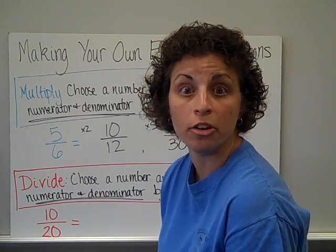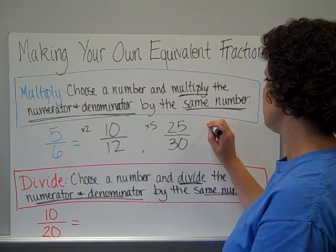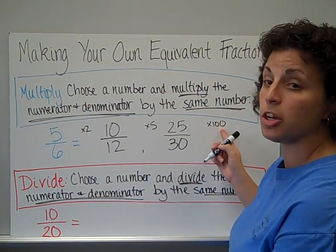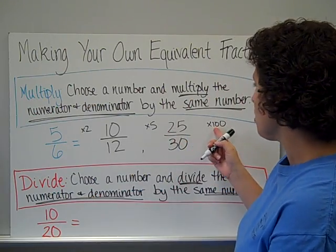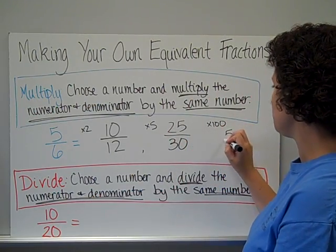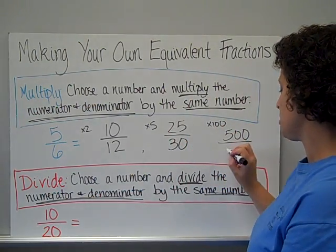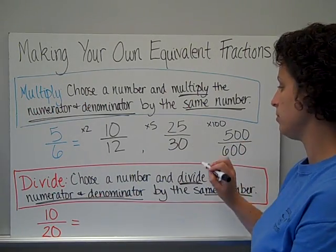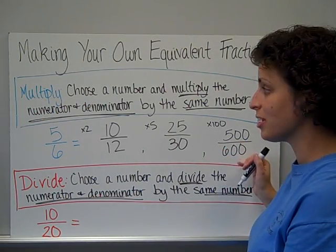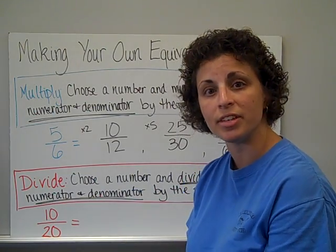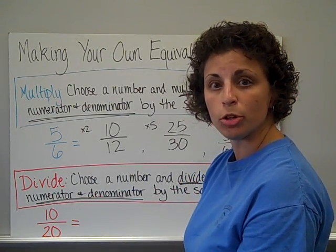Now, I could get crazy and choose a hundred. Five times one hundred, I'm just making a note here to show you what I'm multiplying by, five times one hundred, five hundred. Six times one hundred, six hundred. And yes, five hundred six hundredths is the same as five-sixths. So, you can choose any number you want to multiply by.